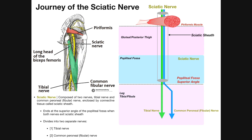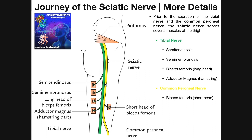After exiting the greater sciatic foramen, the nerve goes under the piriformis and stays in the sciatic sheath with the two parts bound together all the way until the popliteal fossa, though it does branch along the way. The tibial part, shown in green, serves most of the hamstring muscles — specifically the semitendinosus, semimembranosus, long head of the biceps femoris, and the hamstring part of the adductor magnus. The only hamstring muscle with significant contribution from the common peroneal nerve is the short head of the biceps femoris. Most branches before bifurcation come from the tibial portion.